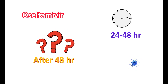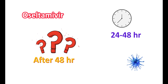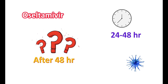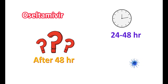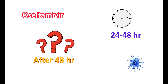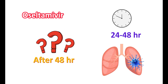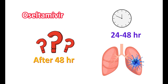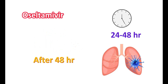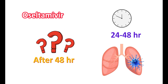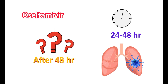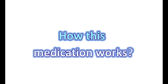Oseltamivir does not inhibit the replication of the virus — it only inhibits the release of the virus. Therefore it should be given within 48 hours of onset of symptoms. If given after 48 hours, more virus can enter the mucous membrane of the respiratory tract, increasing infiltration of viral cells and leading to more respiratory symptoms. For both treatment and prevention, oseltamivir should be given within 48 hours of onset of symptoms.